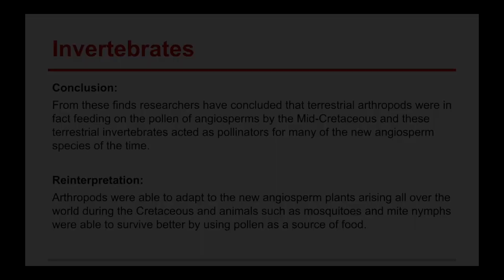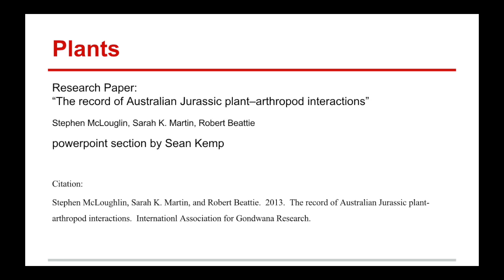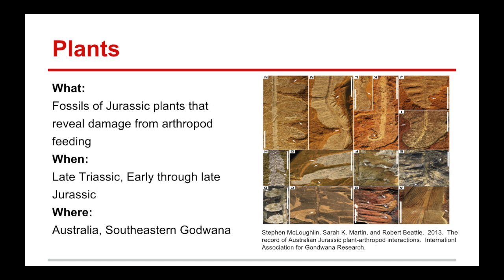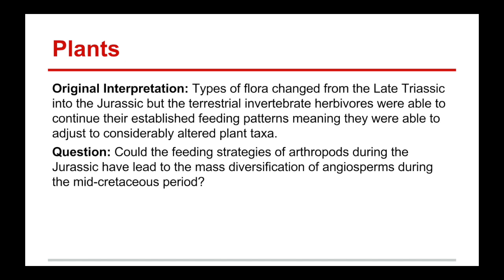My name is Sean Kemp, and my paper was "The Record of Australian Jurassic Plant-Arthropod Interactions" by Stephen McLoughlin, Sarah K. Martin, and Robert Beattie. Geologists studied fossils of Jurassic plants that reveal damage from arthropod feeding from the late Triassic through the Jurassic in southeastern Gondwana in Australia. Geologists noticed that types of flora changed drastically from the late Triassic into the Jurassic, but the terrestrial invertebrate herbivores were able to continue their established feeding patterns. My question is: could the feeding strategies of arthropods during the Jurassic have led to the mass diversification of angiosperms during the mid-Cretaceous period?